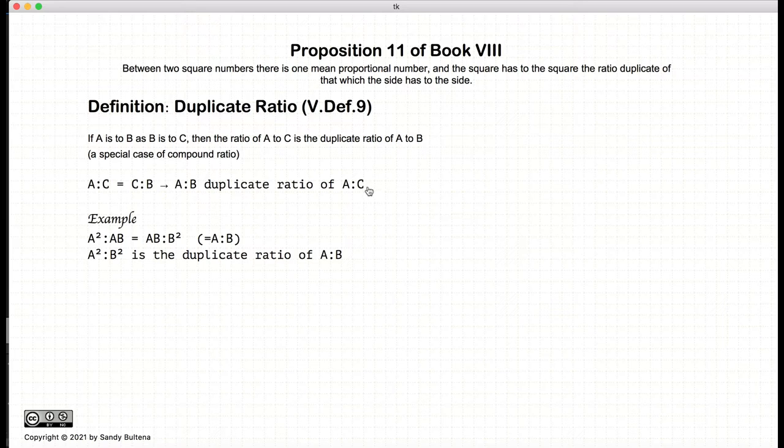And just to give you some context of why it might be called a duplicate ratio, we have an example where a squared to ab is equal to ab to b squared. In other words, both of these ratios are a to b, and thus a squared to b squared is the duplicate ratio of a to b. So this is where the name duplicate ratio comes into play. But again, the definition is shown here. This is the definition.